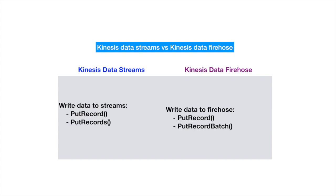From a developer's perspective, for writing a single record both services use the PutRecord method. But for Kinesis Data Streams, writing multiple or batch records uses the PutRecords method, whereas Kinesis Data Firehose uses the PutRecordBatch method.